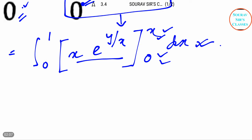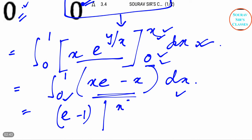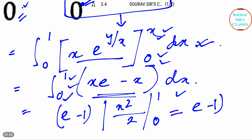Now we substitute the limits — putting y = x and y = 0. This gives us integration from 0 to 1 of x(e − 1) dx. Simplifying and integrating with respect to dx with limits 0 and 1, we get (e − 1) times x²/2, and putting in the limits 1 and 0 gives us (e − 1)/2.